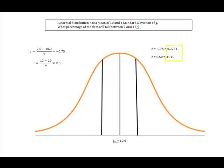So if I simply take 27.34 plus the 19.15, when I add those two together, it gives me 46.49%. And what that allows me to do is to say what percentage of the data falls between 7 and 12. A total of 46.49,